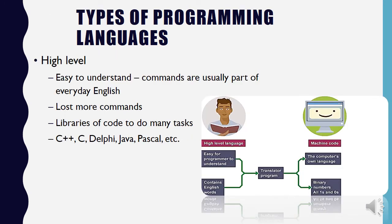Then you get high-level languages — the type of languages you are probably learning in your IT course at school, like Java or Delphi. These languages are made to be easy to understand; they are not as technical, and the commands are more like everyday English. There are many more commands than in assembly language, and often there is also a library of code that allows you to do nearly anything. Examples include C++, C, Delphi, Java, and Pascal.